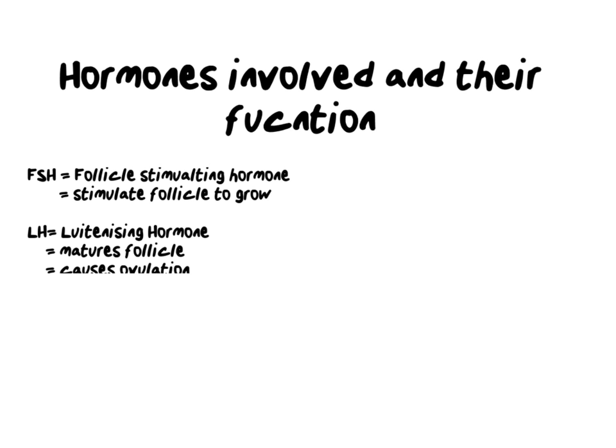The first set of hormones are our pituitary gland hormones, which come from the pituitary in the brain. First up is FSH, or follicle-stimulating hormone. Follicle-stimulating hormone is sent to the ovary where it stimulates a follicle to grow. A follicle is a sac-like structure that houses an undeveloped egg or ovum, and we want to make it bigger and more robust — the only way to do that is to stimulate it with FSH.